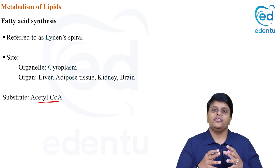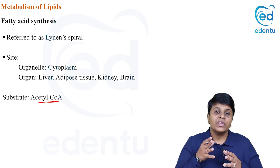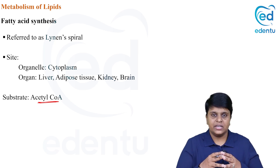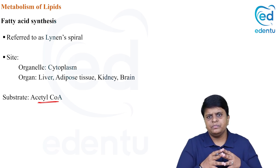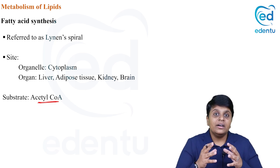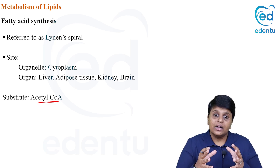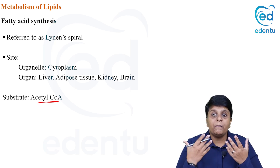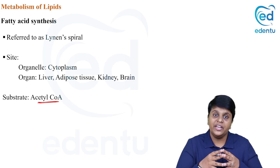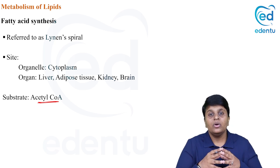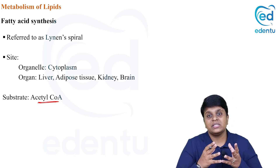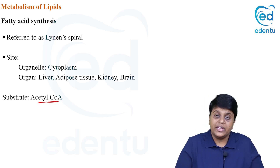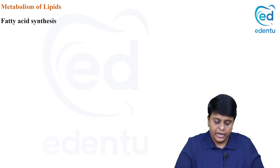The end product of fatty acid oxidation is acetyl-CoA, and the starting substrate for fatty acid synthesis is also acetyl-CoA. Fatty acid synthesis occurs when there is a lot of energy being produced. This acetyl-CoA is produced from pyruvate by the action of pyruvate dehydrogenase within the mitochondria, which is the major source of acetyl-CoA for fatty acid synthesis.